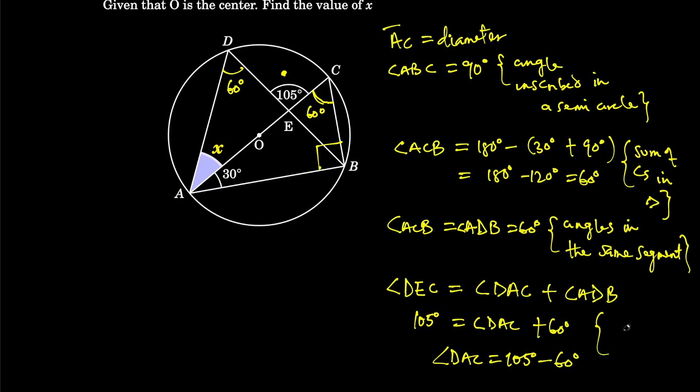And so angle DAC equals 105 degrees minus 60 degrees. Remember the reason is because you have an exterior angle which is equal to the sum of two interior angles. So angle DAC is equal to 45, which means x equals 45 degrees.